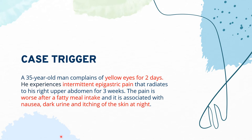Here's the case trigger. A 35-year-old man complains of yellow eyes for two days. He experiences intermittent epigastric pain that radiates to his right upper abdomen for three weeks. The pain is worse after a fatty meal intake and is associated with nausea, dark urine, and itching of the skin at night. You may pause the video to think of the differential diagnosis and the history you would like to take from this patient.